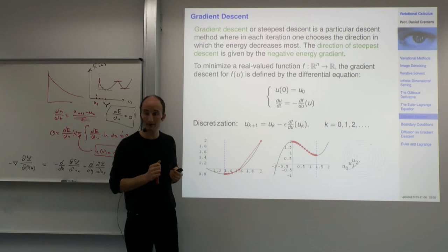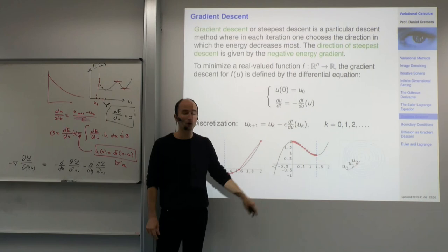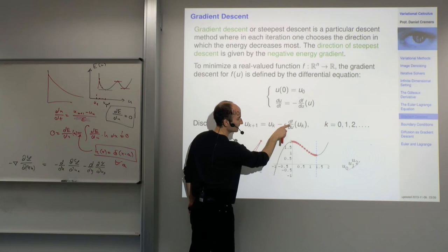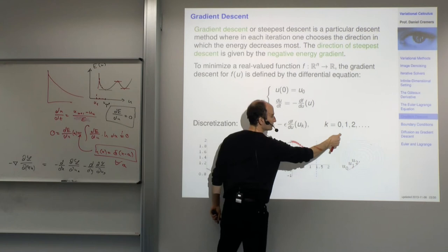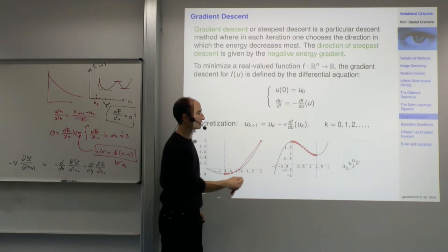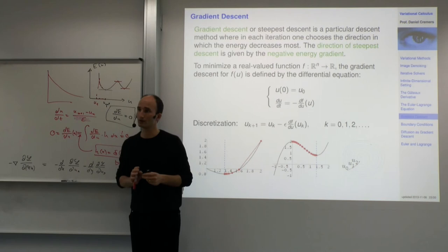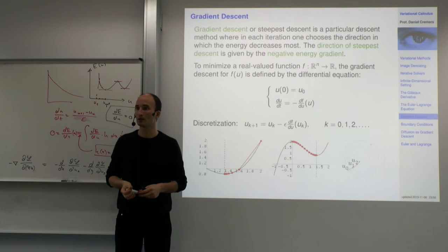One issue with gradient descent in practice: if epsilon is too large in the discretization, you might step past the minimum and actually get a higher energy. You need to choose the step size so it doesn't overstep the minimum. If epsilon is sufficiently small it works, but determining what 'sufficiently small' means is an almost endless question in practice.